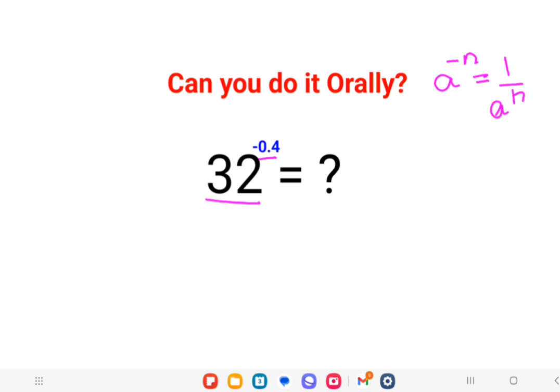Now 32, let's write this in its simplest form. I can write 32 as 2 raised to 5, the whole raised to 0.4. Why have I made it positive? Because I am going to put it into a reciprocal.